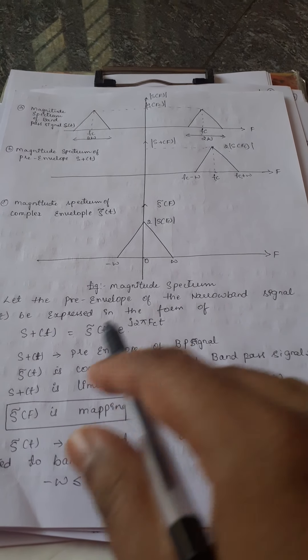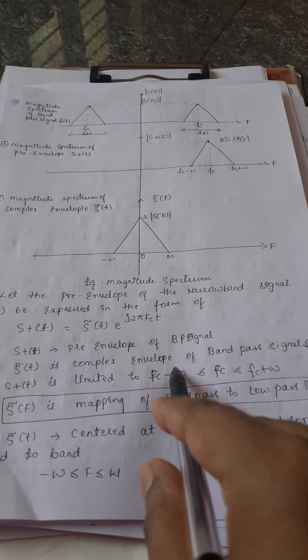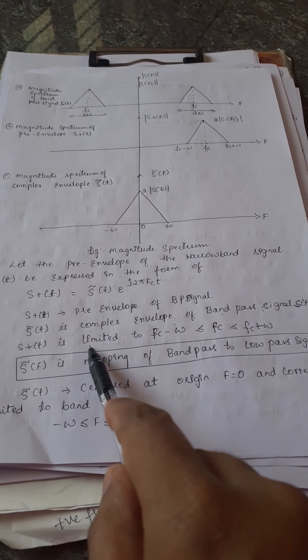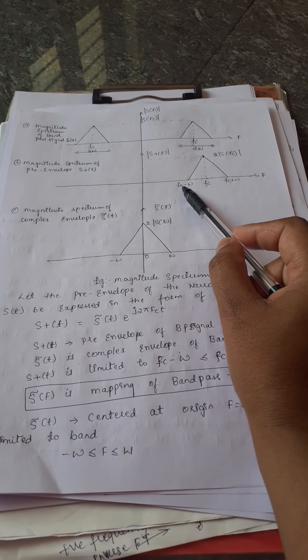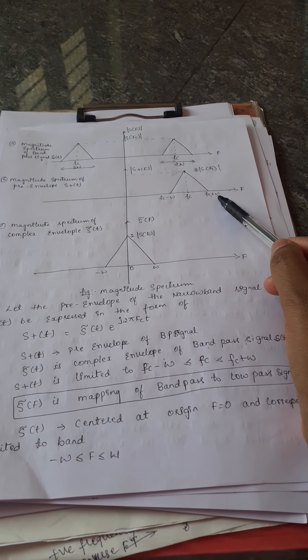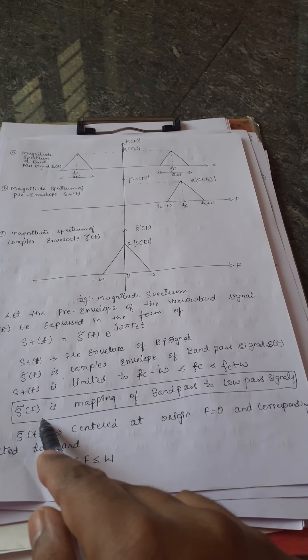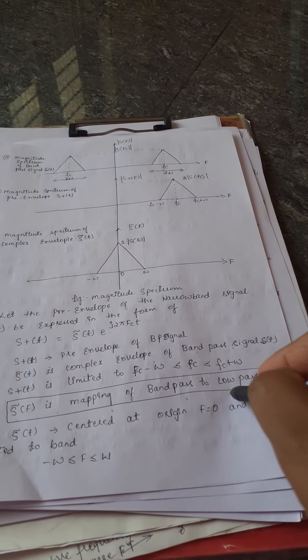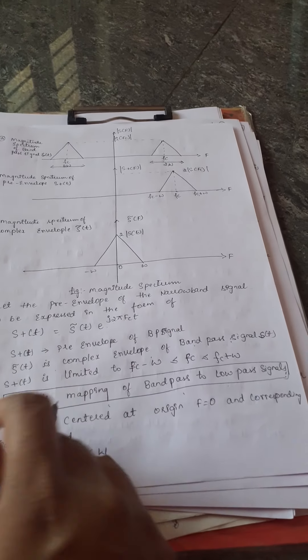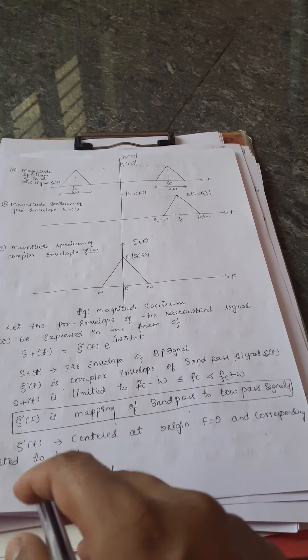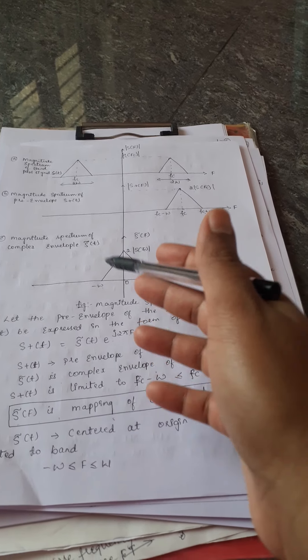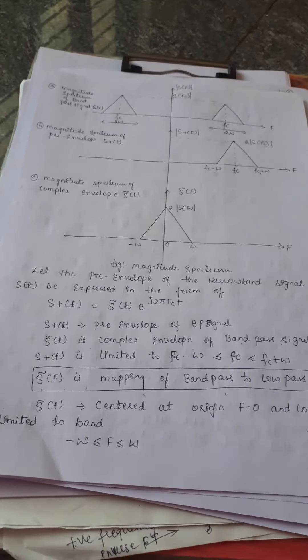Here, S⁺(T) is the pre-envelope of the band pass signal and S̃(T) is the complex envelope of the band pass signal S(T). S⁺(T) is limited to the frequency range from FC−Ω to FC+Ω, whereas S̃(T) is centered at the origin and corresponds to the frequency band from −Ω to +Ω, as explained in the spectrum diagram.